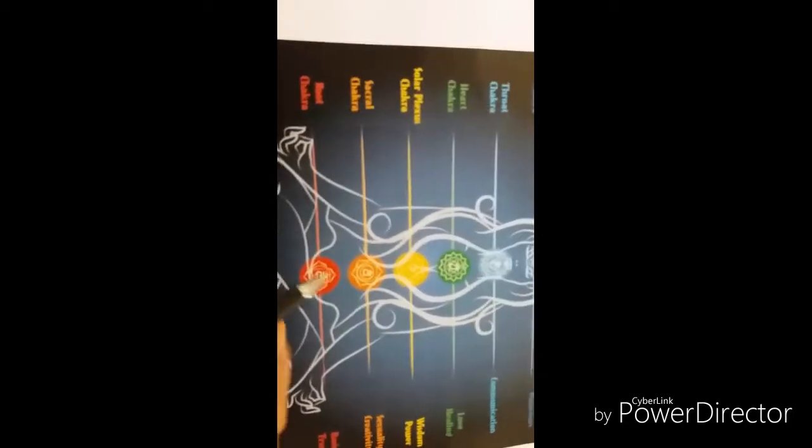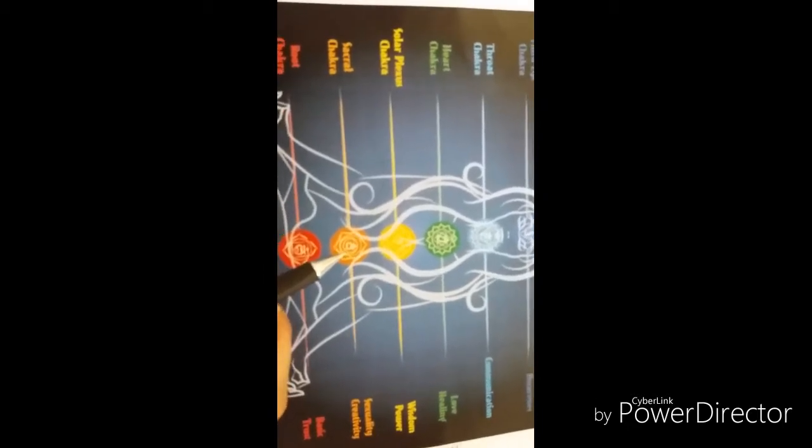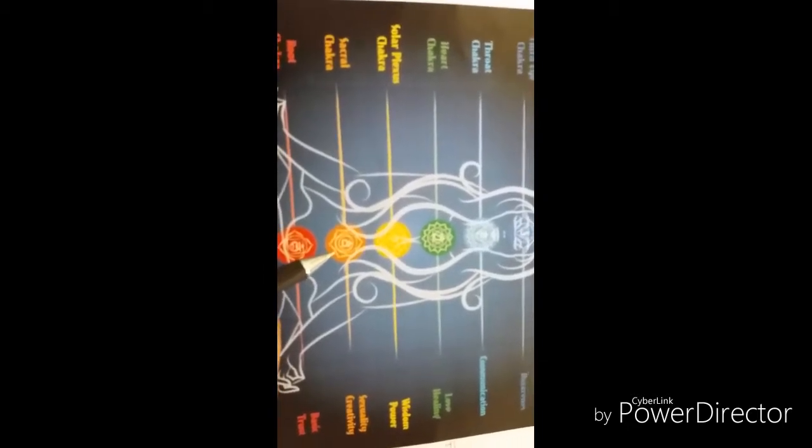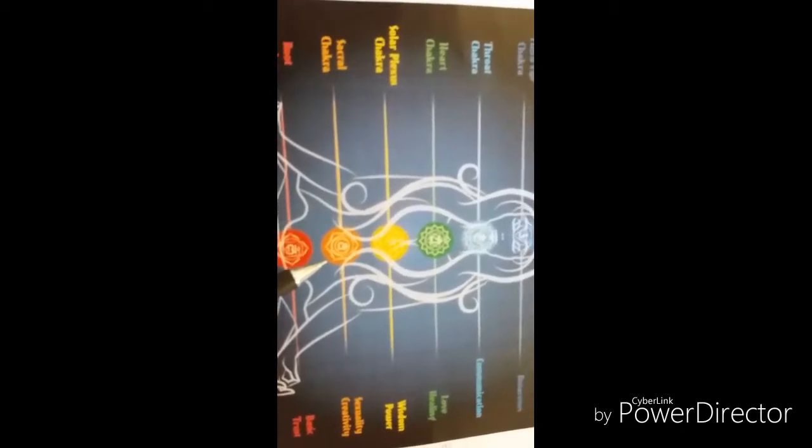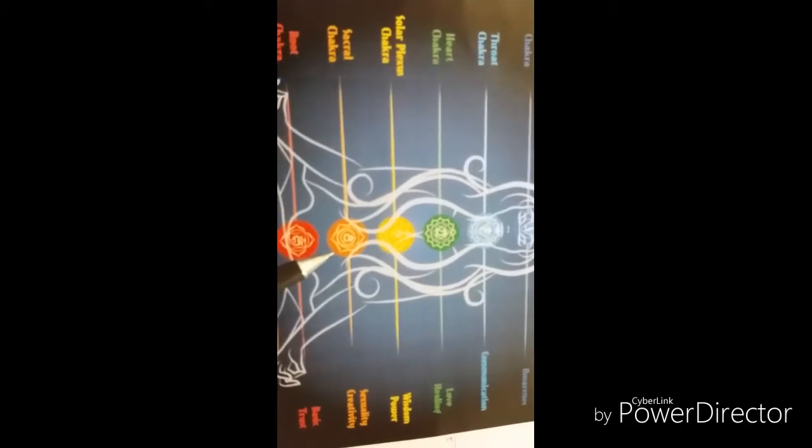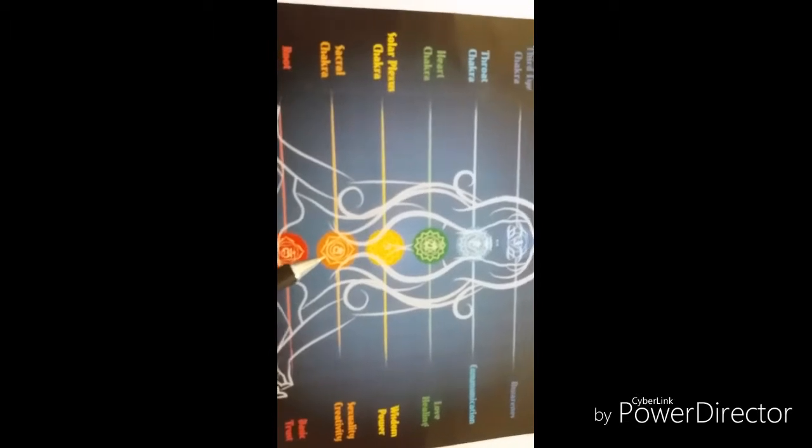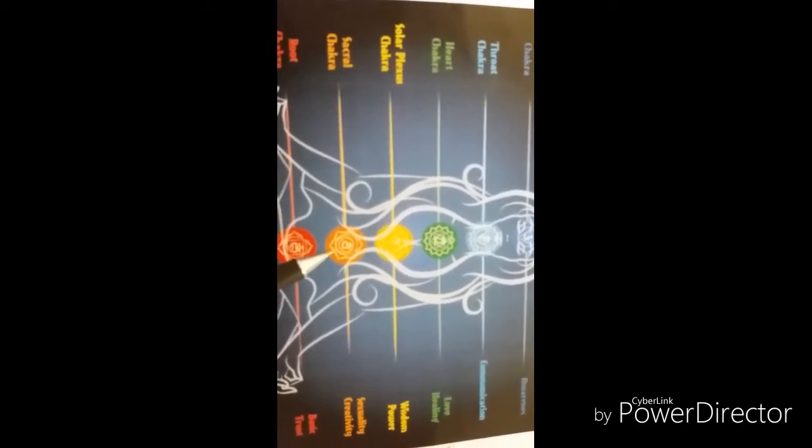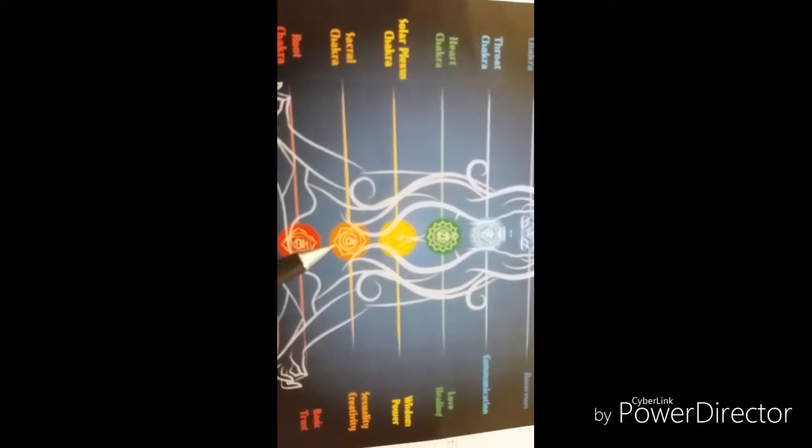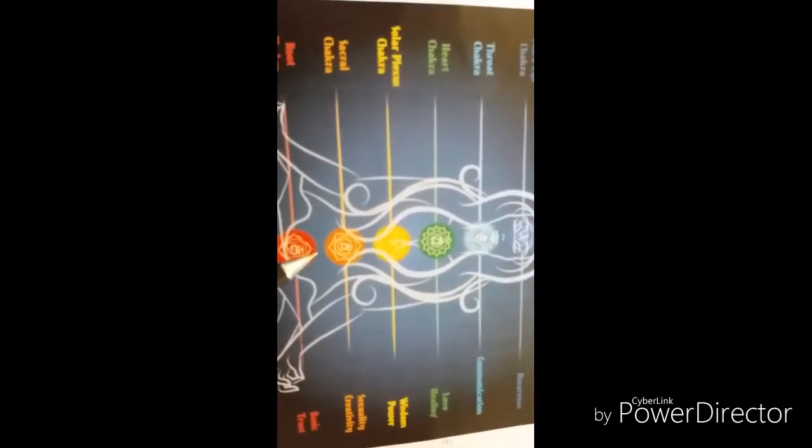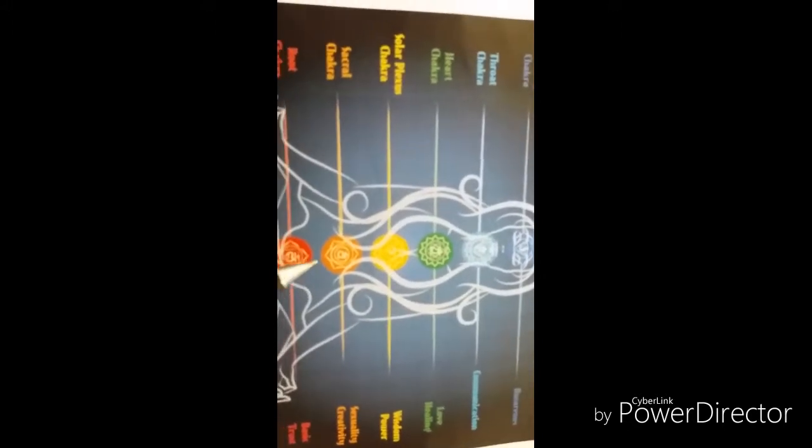Going to our second chakra, that is the sacral chakra, also known as Swadhisthana chakra. It is related to our sexual organs, sexuality, and pleasure. Sacral chakra is our connection and ability to accept others and new experiences. Its location is lower abdomen, about two inches below the navel. Emotional issues related to it are sense of abundance, well-being, pleasure, and sexuality.